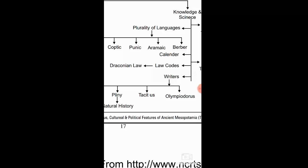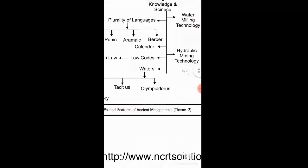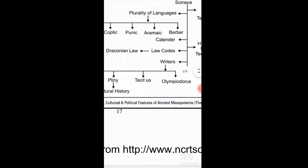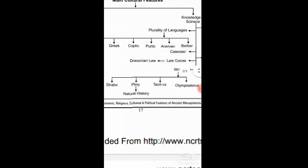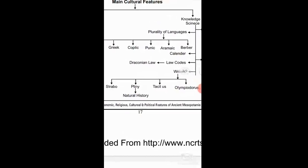They also had the concept of dividing the year into 12 months and had a calendar system. They had a proper law system, including the Draconian law and law courts. In terms of technology, they had knowledge of mining and using hydraulic water power for mechanical purposes. There were also notable writers such as Strabo, Pliny, Tacitus, and others, whose works show their great knowledge of society, nature, and science.